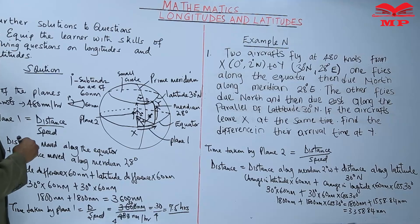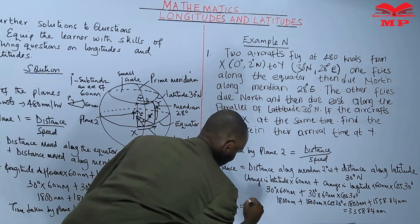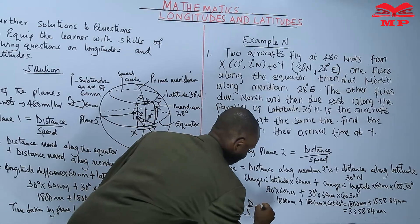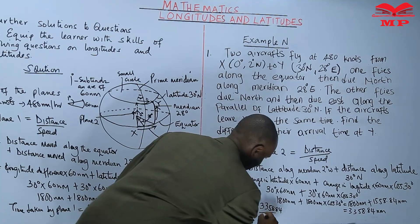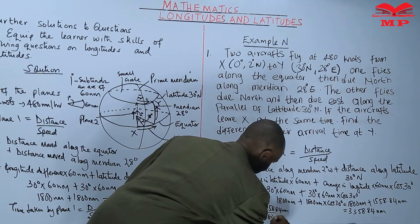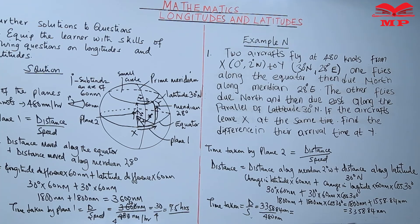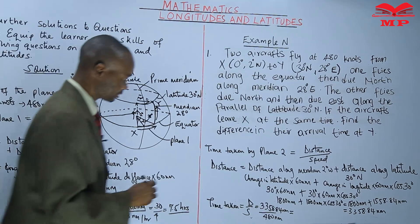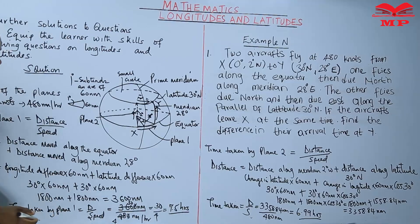1800 times cosine 30 gives 1558.84 nautical miles. When I add to 1800, that gives me 3358.84 nautical miles. Time taken will be distance over speed: 3358.84 divided by 480 nautical miles per hour, which gives us 6.99 hours. You can easily see which one took more time — it is plane one because it moved a longer distance.